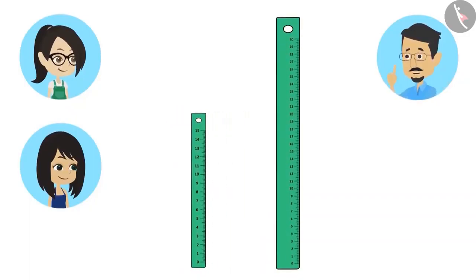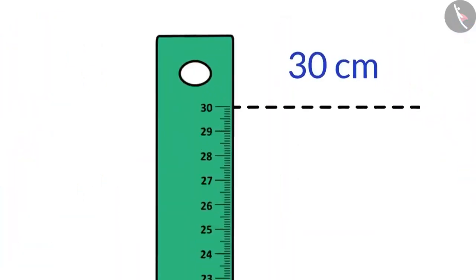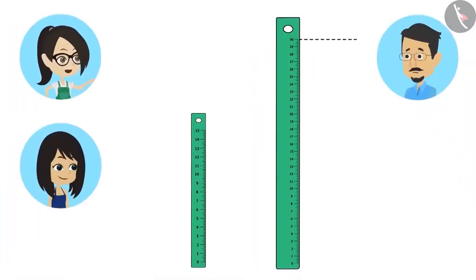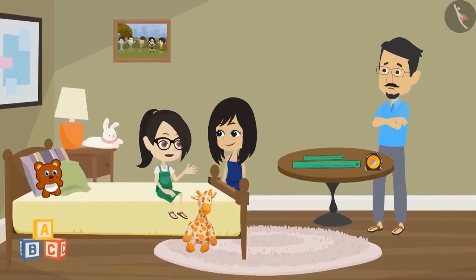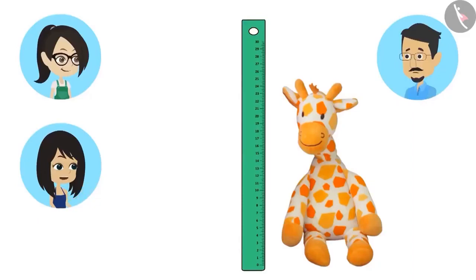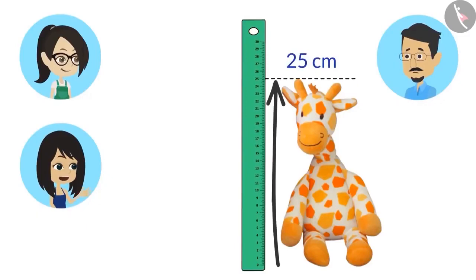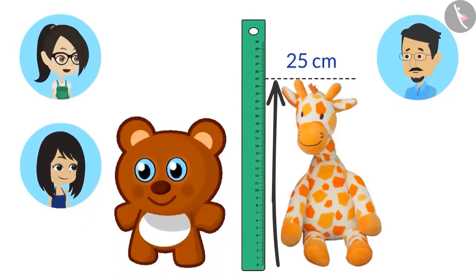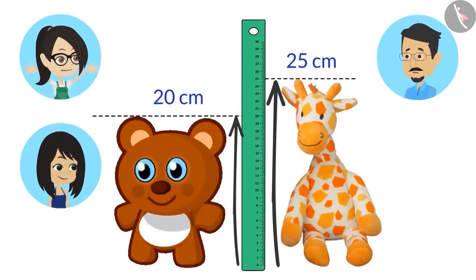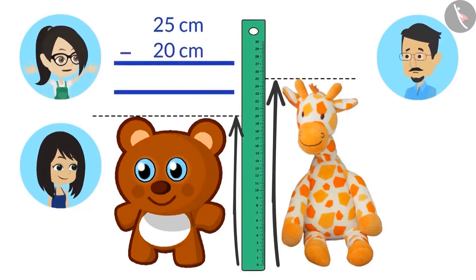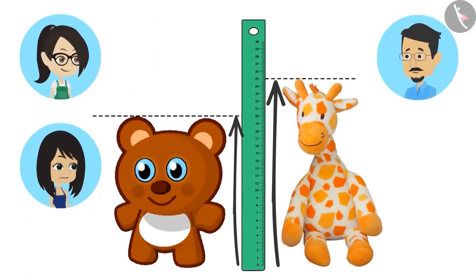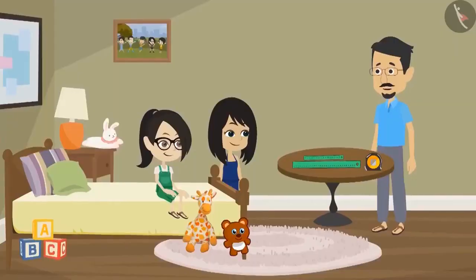They use the 30-centimeter scale to measure toys. The giraffe toy is 25 centimeters tall and the bear toy is 20 centimeters tall. To find how much shorter the bear is than the giraffe: 25 minus 20 equals 5 centimeters. The giraffe is 5 centimeters taller than the bear. They answered correctly.